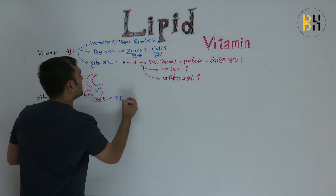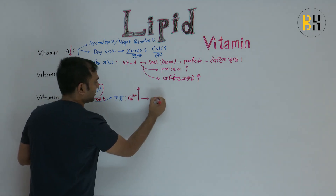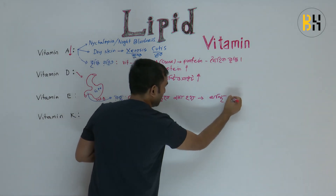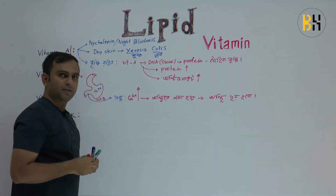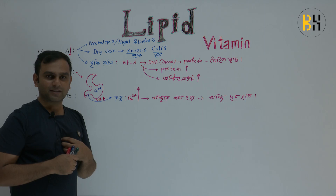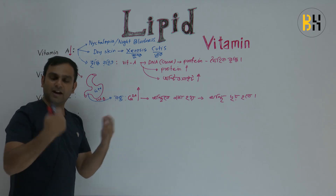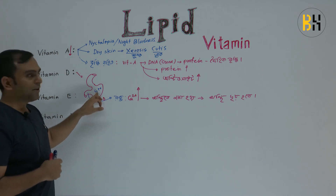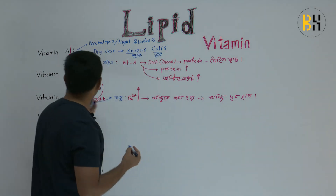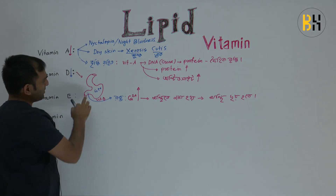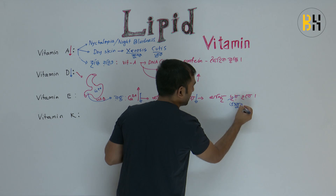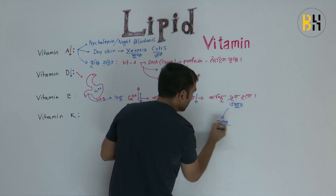We keep the calcium. When we keep the calcium and calcium levels are maintained. If we don't keep the calcium, there is a problem and you can't avoid that problem. This condition is called osteomalacia.